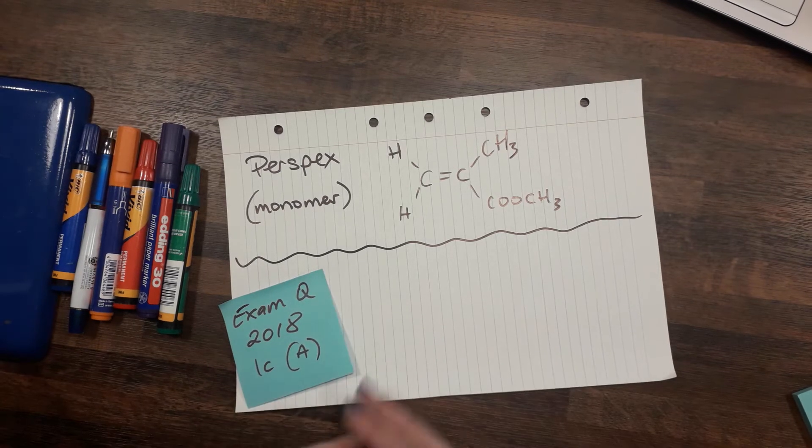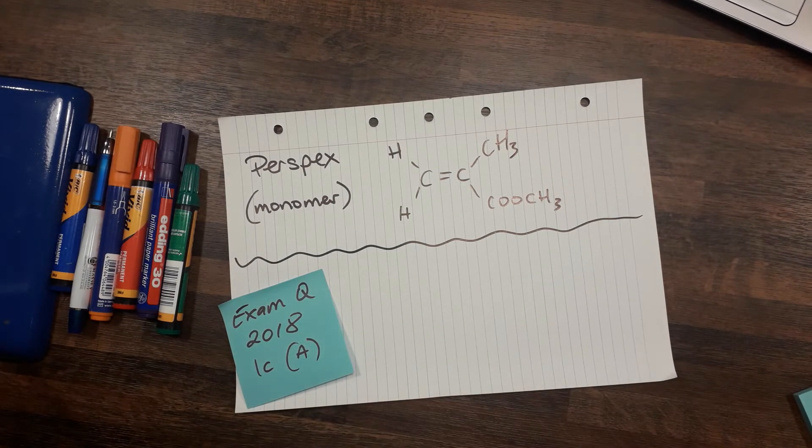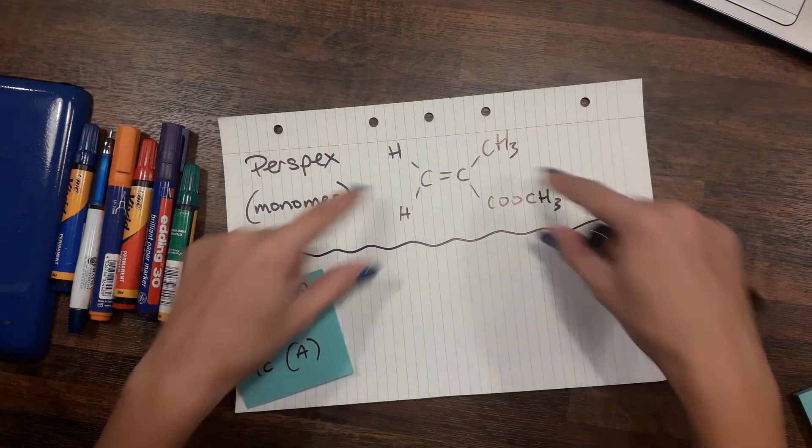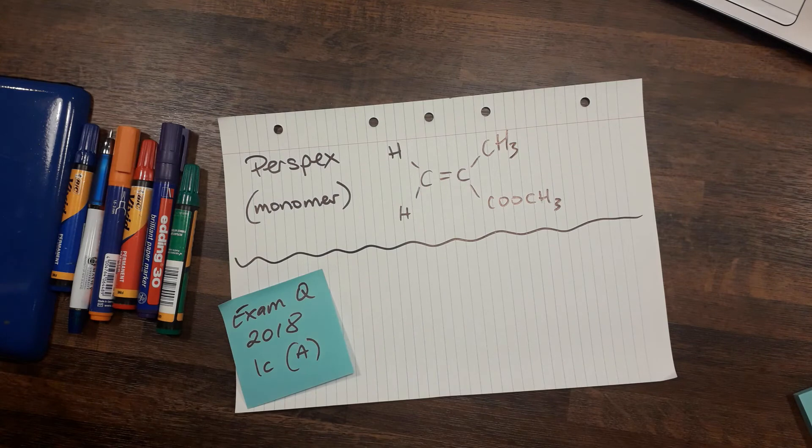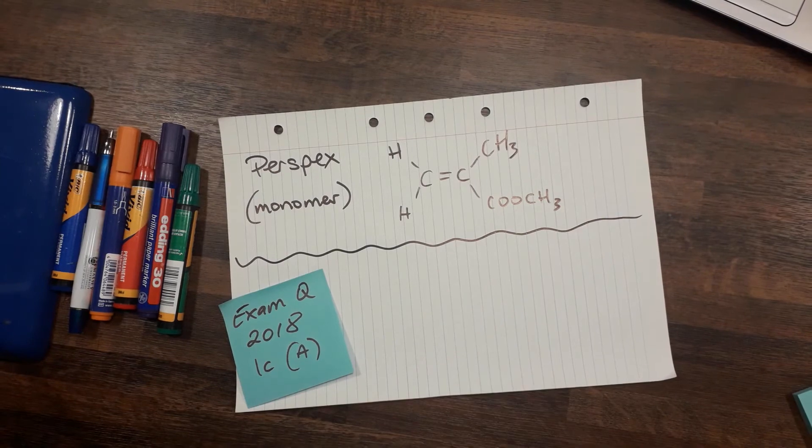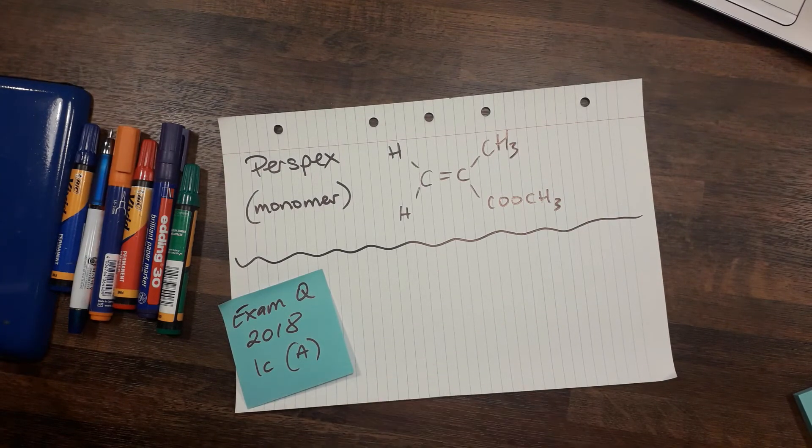So here's the question. Here's Perspex, it's a polymer, and it's like an alternative to glass, it's really strong. Here is the monomer for what Perspex is. It asks you to draw three repeating units. That is typically how many they will ask you to draw.